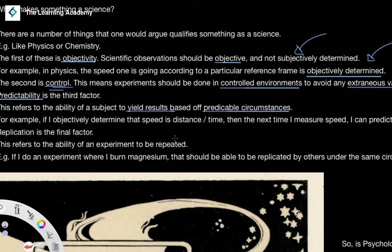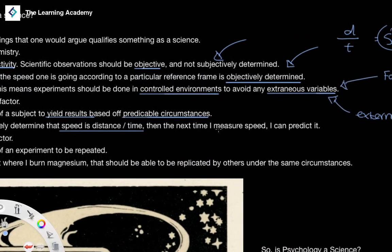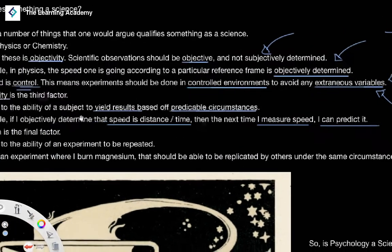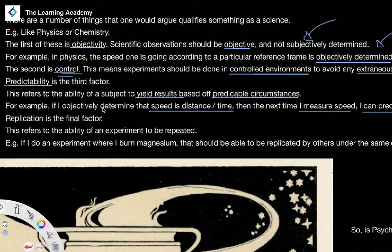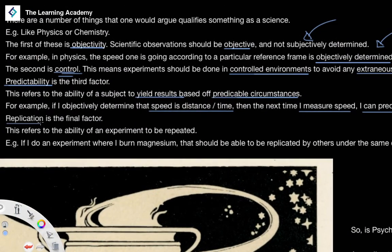So I can objectively determine that speed is distance divided by time. The next time I measure somebody's speed, I can predict it based off the distance divided by time. Simple as that.